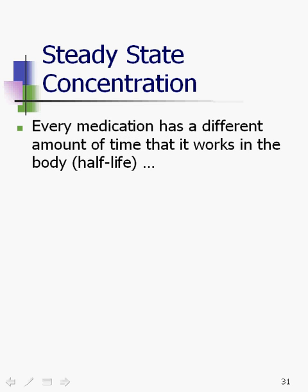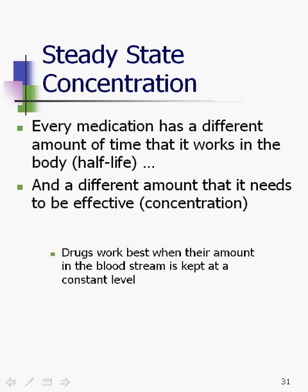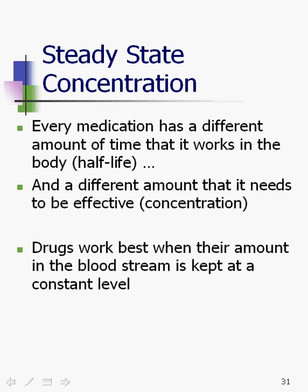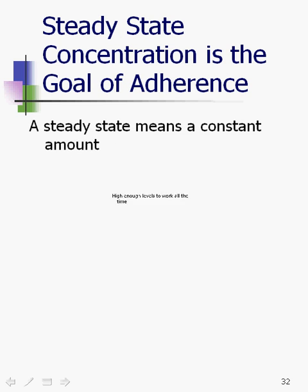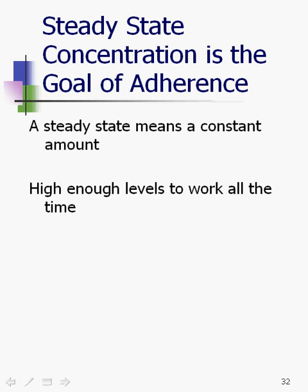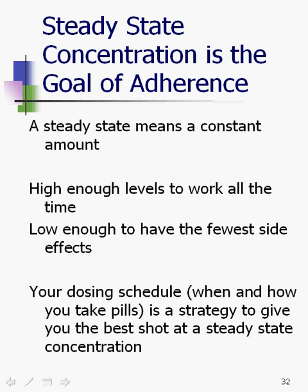Every medication has a different amount of time that it lasts in the body, which is known as half-life. And every medication has a different amount that it needs throughout the body in order to be effective, which is the concentration. Drugs work best when the amount of them in the bloodstream is kept at a constant level, a steady state concentration. That's the technical term, and that's the goal of adherence.